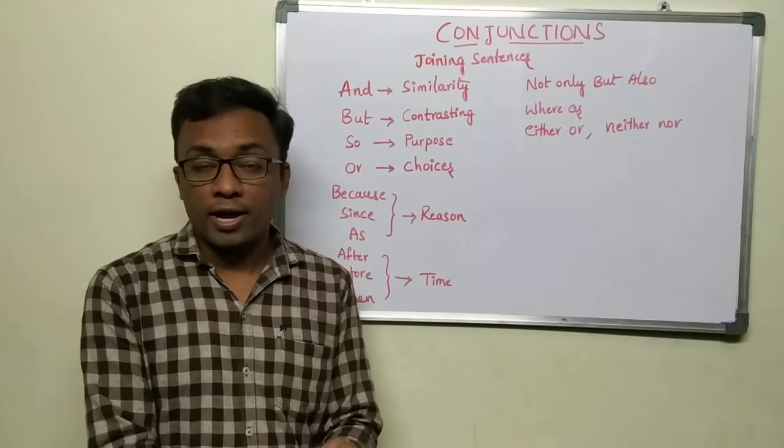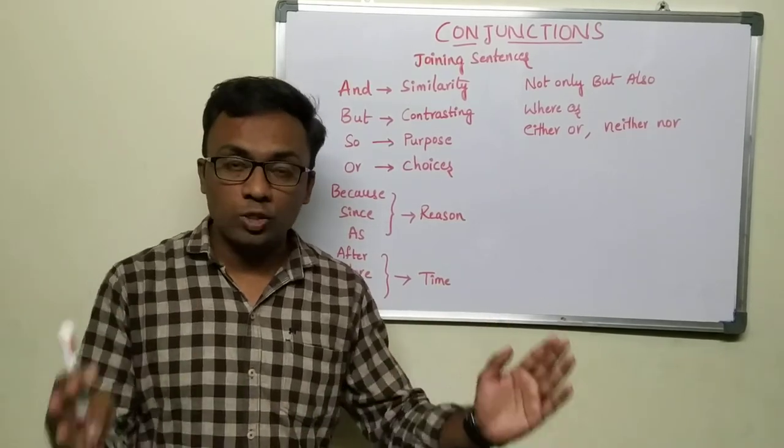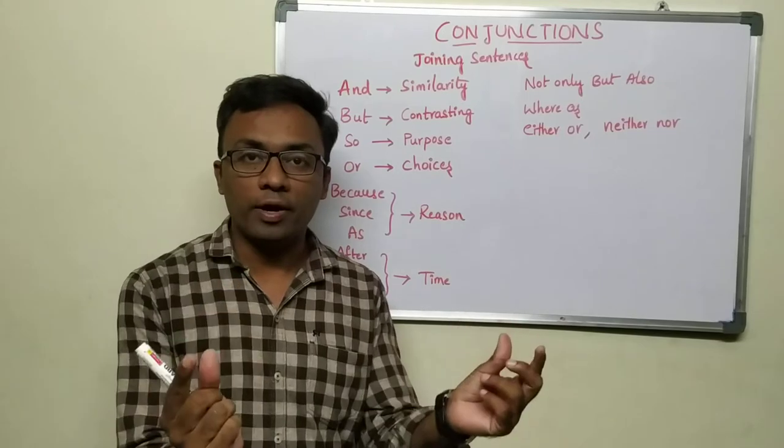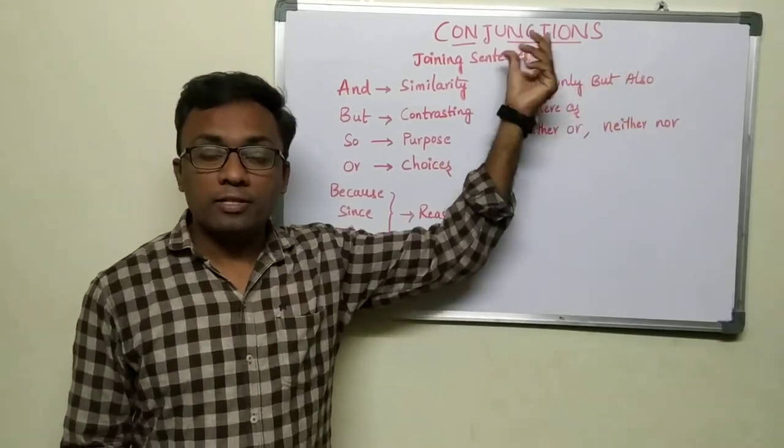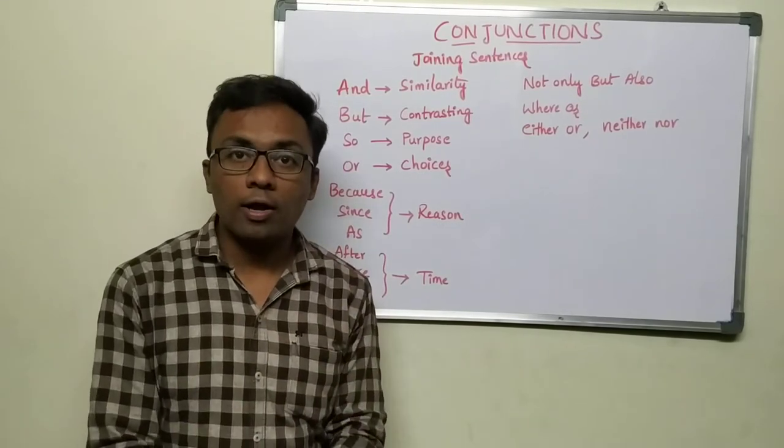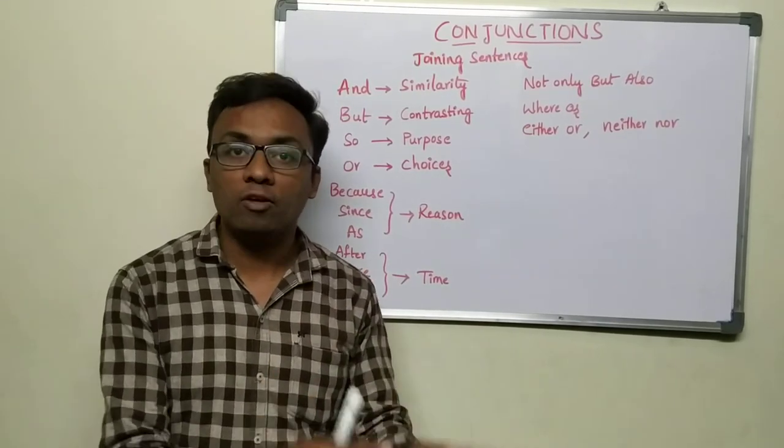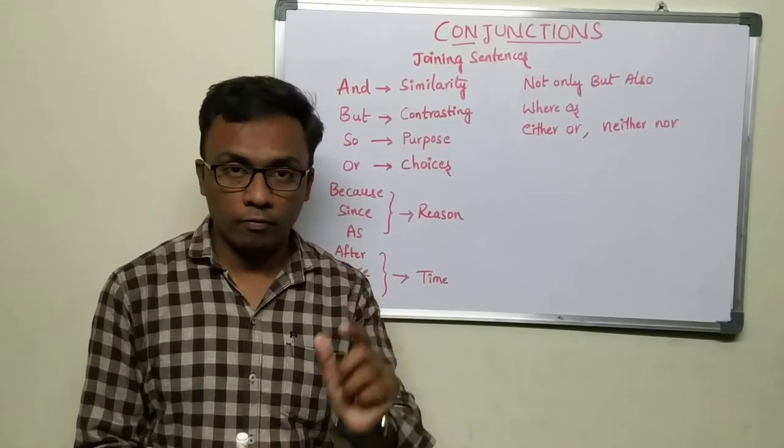In the introduction, we discussed that most English words can be understood by splitting or dividing them. Conjunctions means combining two sentences or making a sentence meaningful.